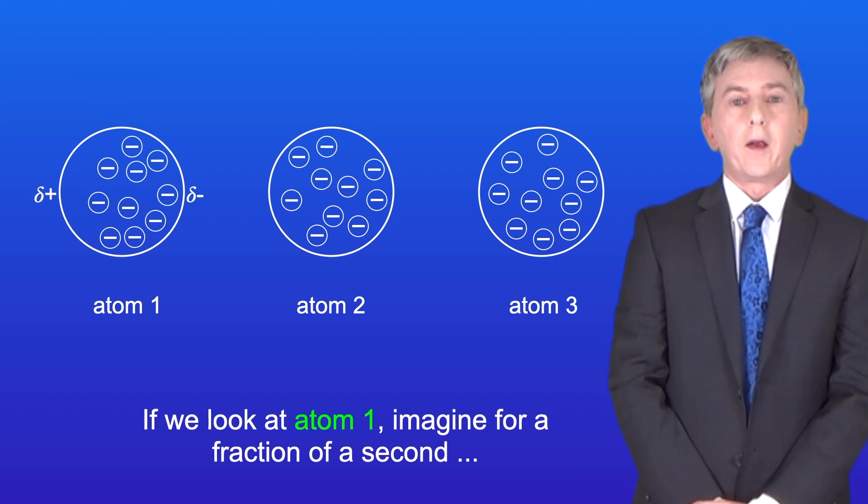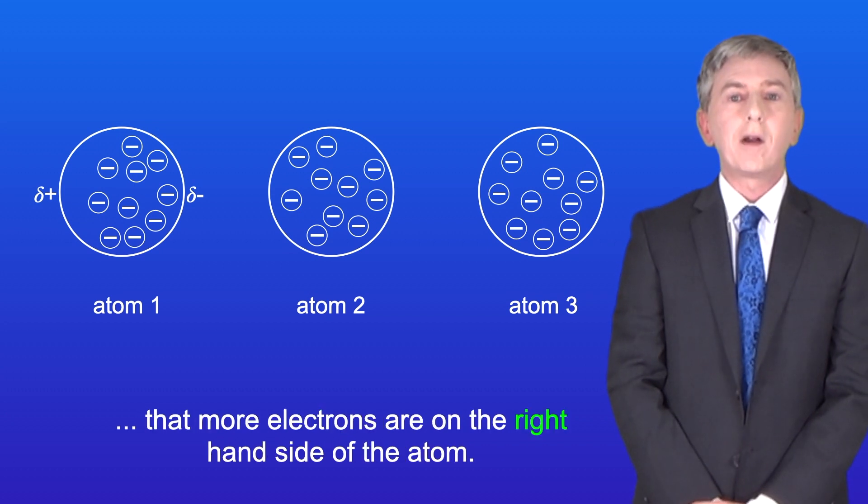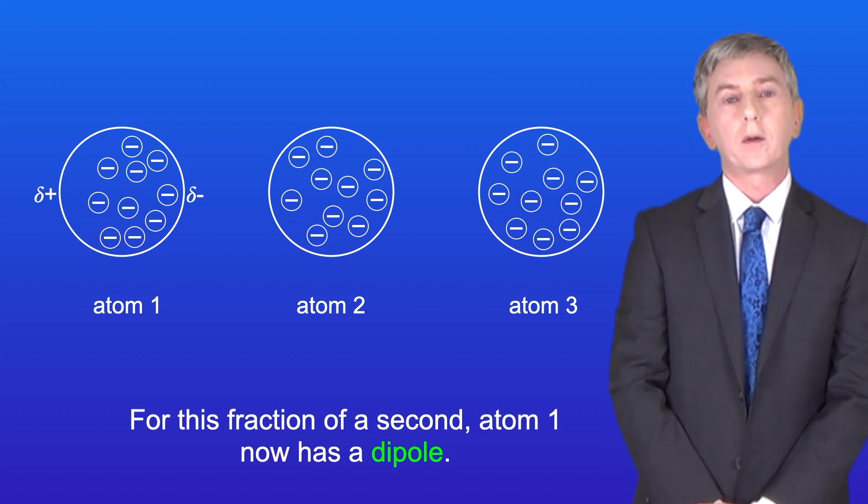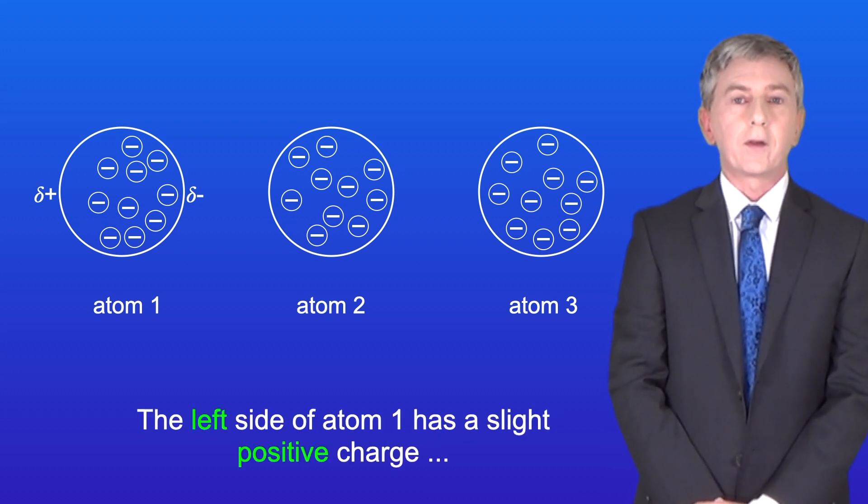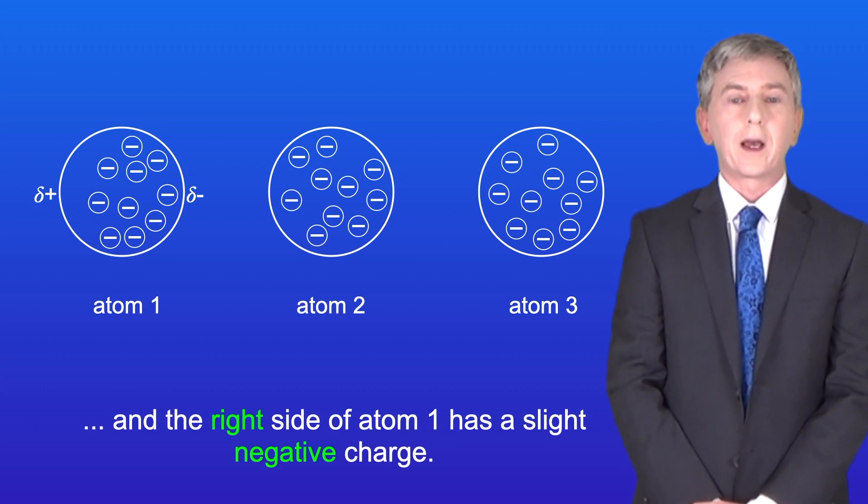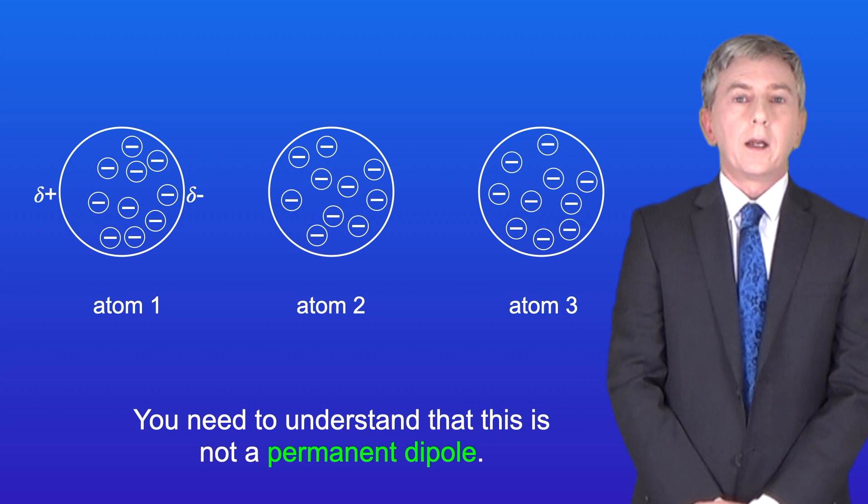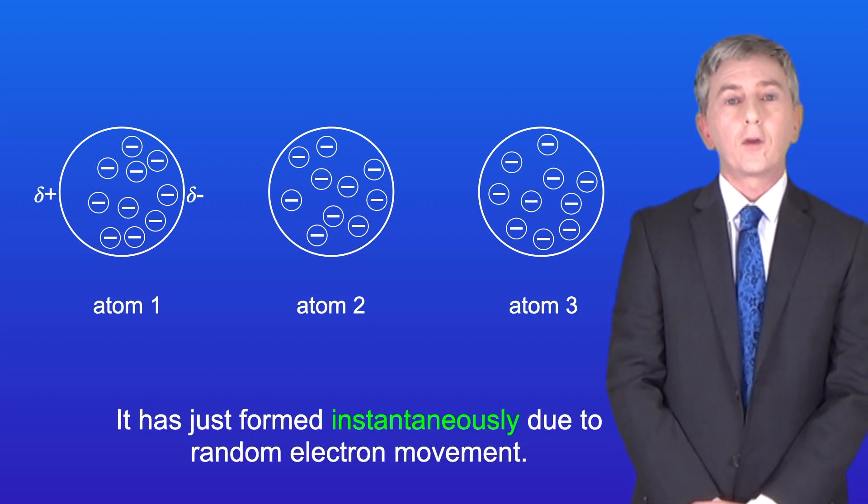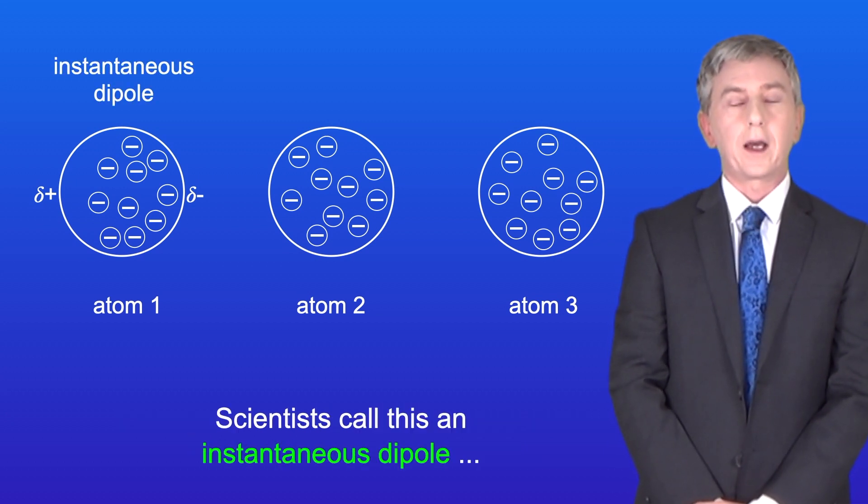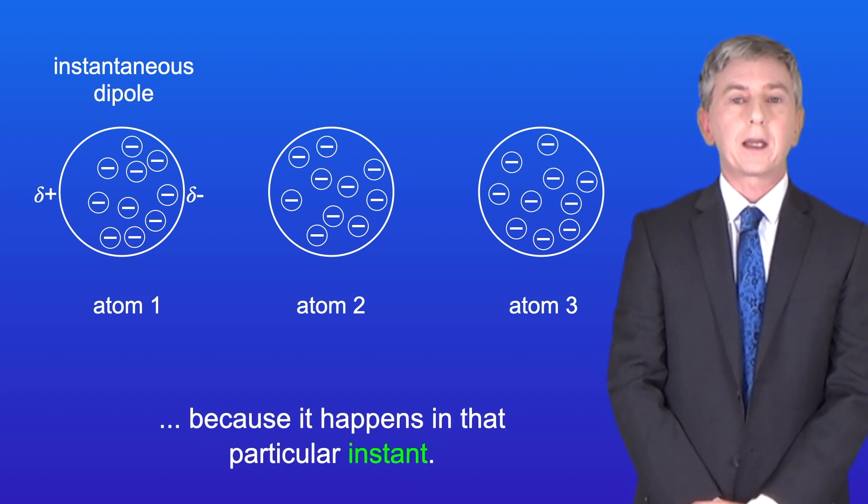If we look at atom one, imagine for a fraction of a second that more electrons are on the right-hand side of the atom. For this fraction of a second, atom one now has a dipole. The left side of atom one has a slight positive charge, and the right side of atom one has a slight negative charge. Now you need to understand that this is not a permanent dipole. It is just formed instantaneously due to random electron movement. Scientists call this an instantaneous dipole because it happens in that particular instant.